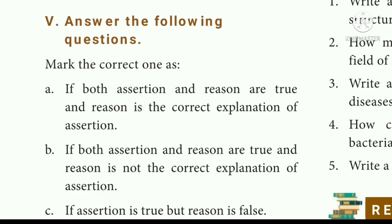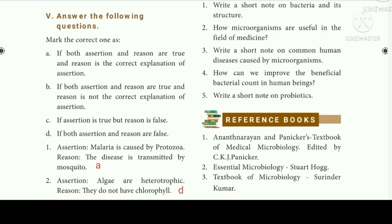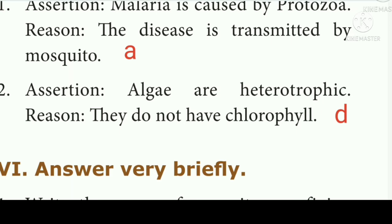Roman numeral 5, Assertion and Reason. Question 1: Assertion: Malaria is caused by protozoa. Reason: The disease is transmitted by mosquito. Answer A: Both assertion and reason are true, and the reason is the correct explanation of the assertion.